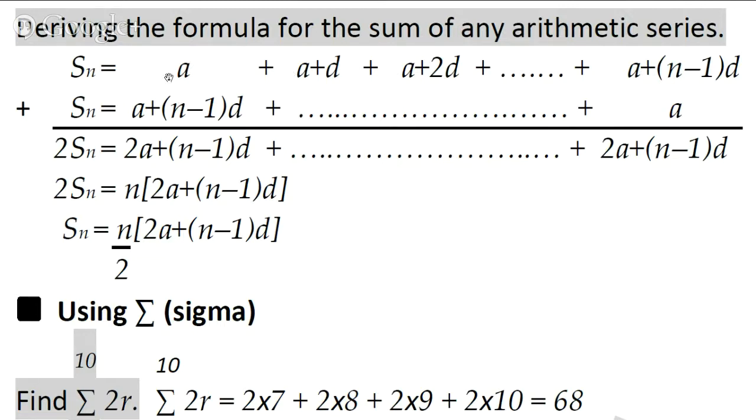Now if you add all this stuff up, i.e. A plus A plus D, A plus 2D, all the way to A plus N minus 1D, and then all of this stuff backwards as well, all together, so that basically you have twice the sum of N terms, like it says here, what happens? Well, actually, if you add the opposite pairs, you get the same result every single time. So A plus A plus N minus 1D, basically, adding these two As gives you two As, and then you've got this N minus 1D.